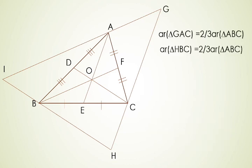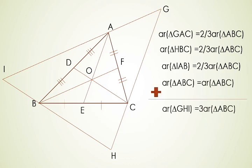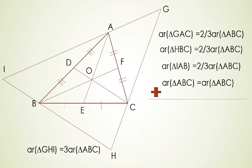Similarly, area of triangle HBC is 2/3 of area of triangle ABC and area of triangle IAB is 2/3 of area of triangle ABC. Now add area of triangle ABC to both sides, and here we get the result that area of triangle GHI — that is, the total of all four triangles inside it — equals three times the area of triangle ABC.